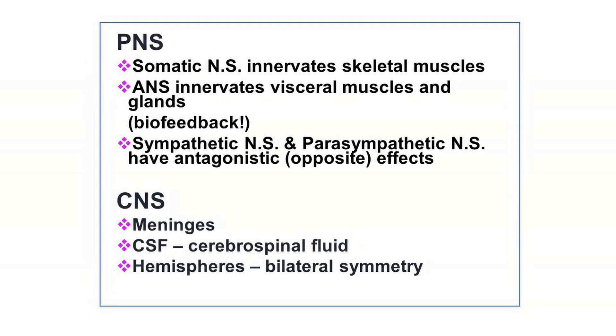Now let's talk about the autonomic nervous system. The autonomic nervous system is composed of the sympathetic and parasympathetic nervous systems, and I've shown you on the PowerPoint that these two parts of our nervous system have antagonistic or opposite effects. Together, the sympathetic and parasympathetic nervous systems innervate every muscle and gland in your body — your stomach muscles, your heart muscles, the muscles of your blood vessels, and so forth — and these two parts have antagonistic or opposite effects.